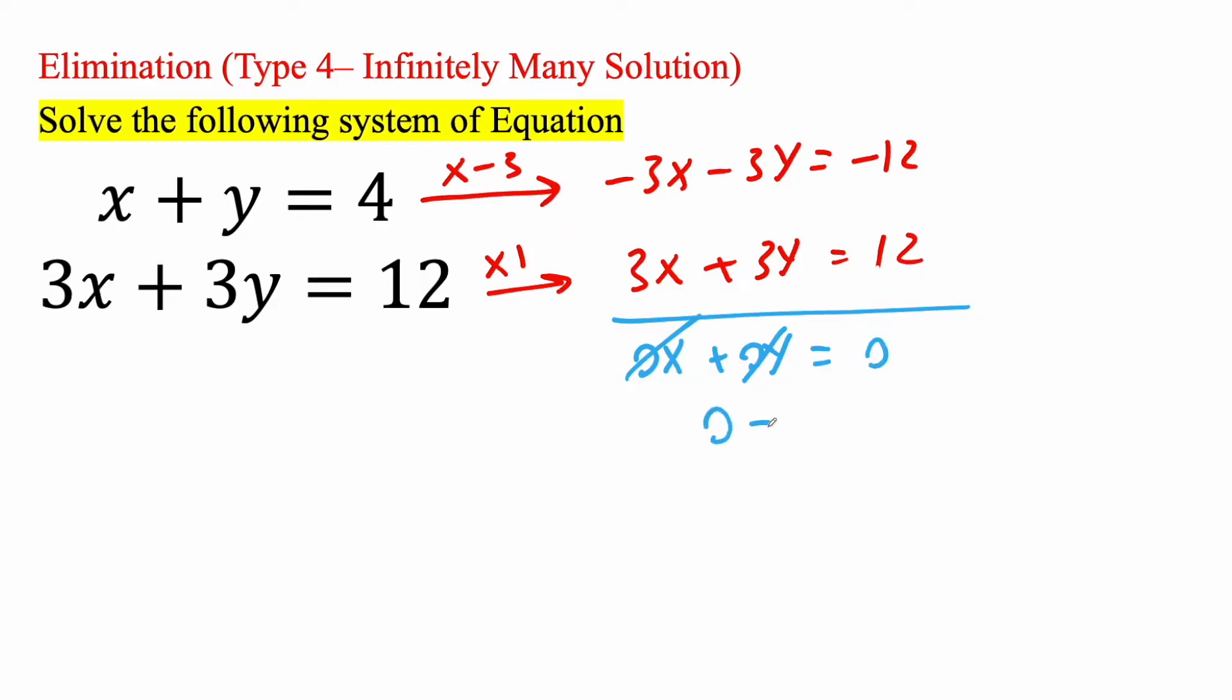So we have 0 is equal to 0, which is a true statement. And so we'll say we have infinitely many solutions. And so this right here is our final answer. And so what exactly does this mean?